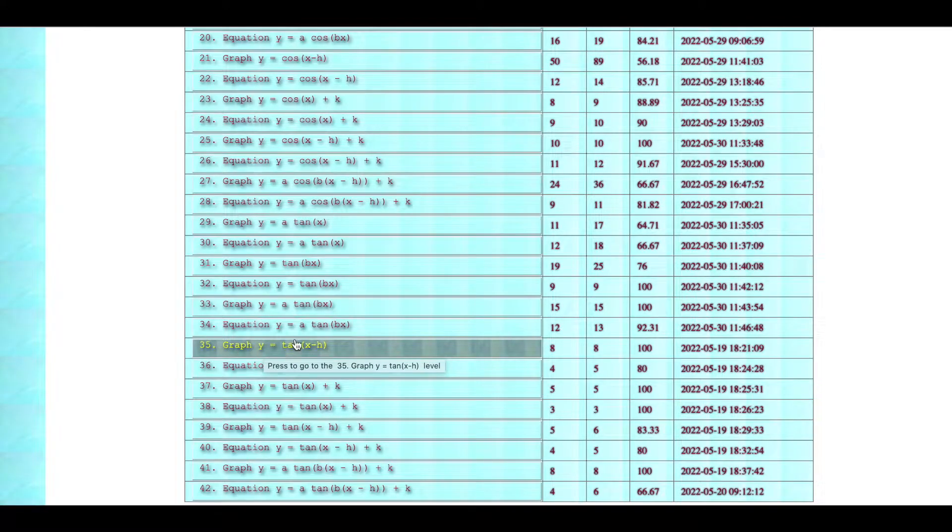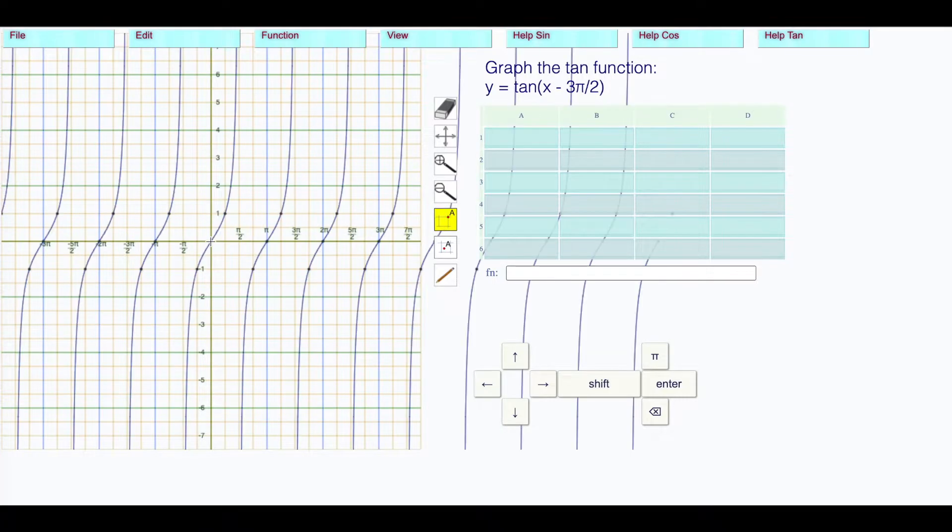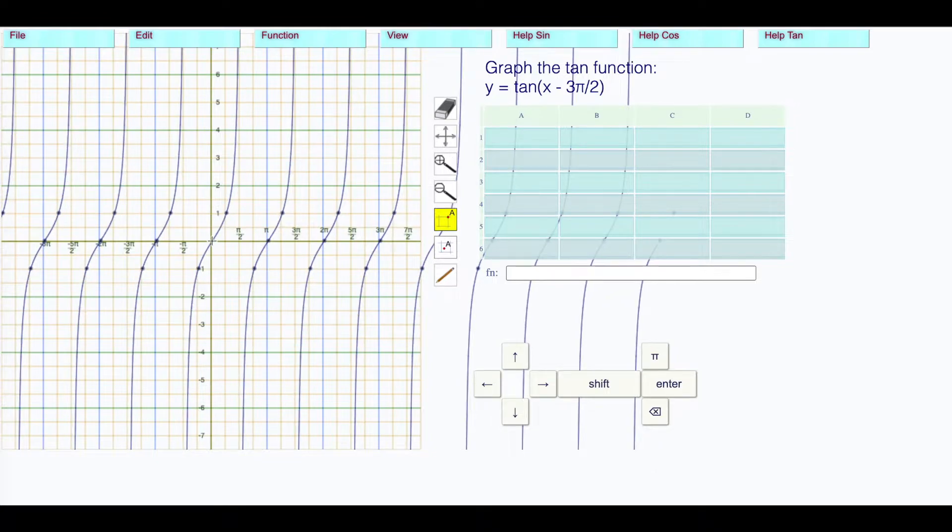Level 35: graph y equals tan of x minus h. This is all about horizontal translation. Here we're translating this graph where h is positive 3π/2, because remember it's x minus h. That's the tan of x minus h. The h is positive 3π/2, which is right here. So I'm going to take this point and move it over to 3π/2.